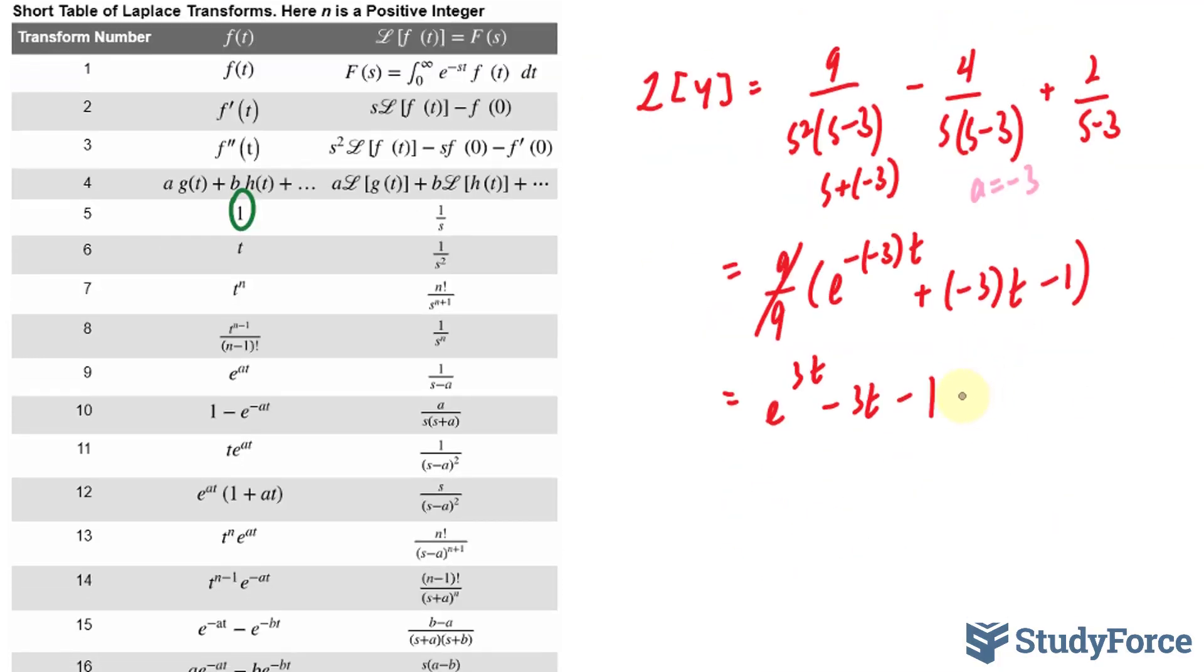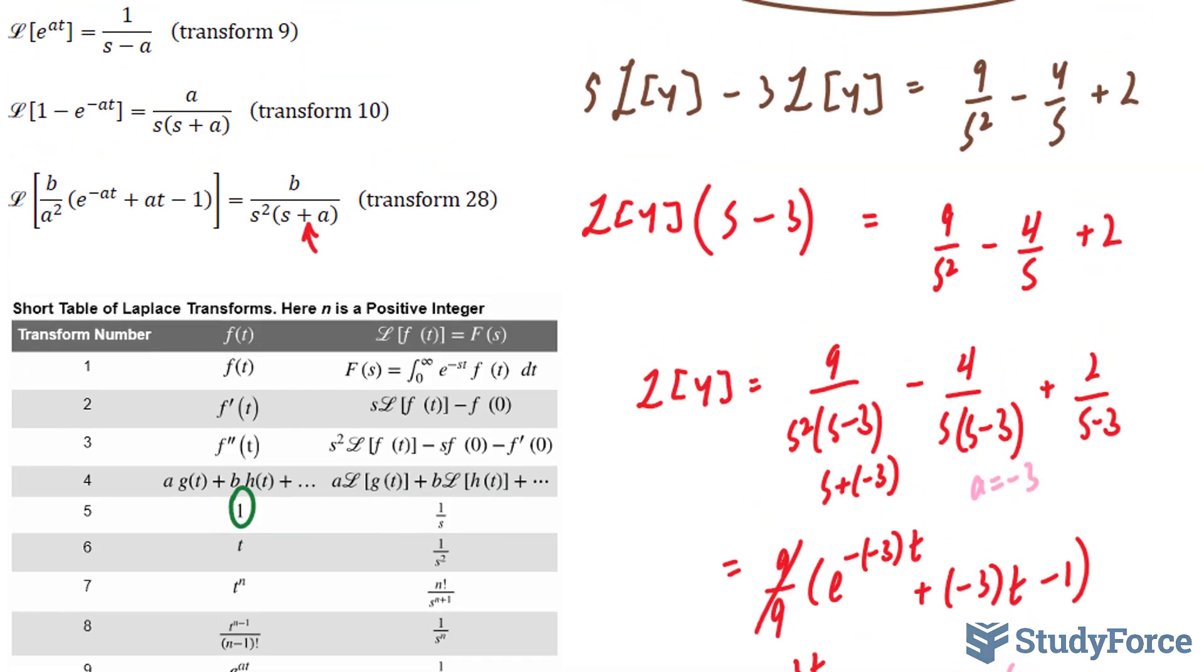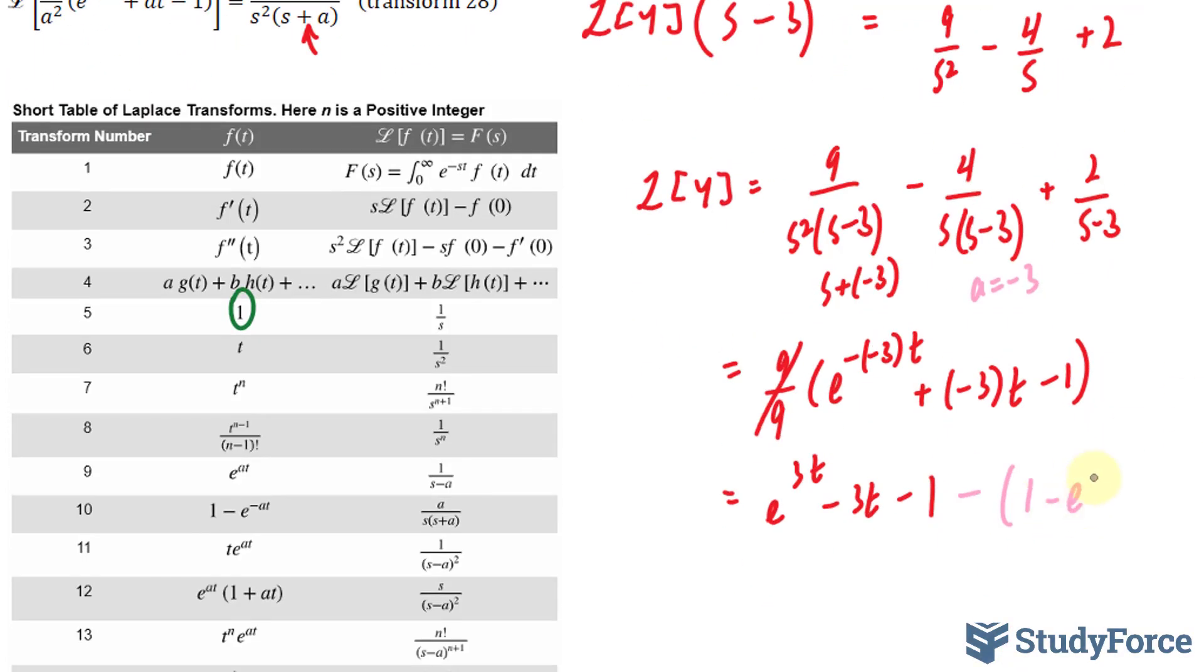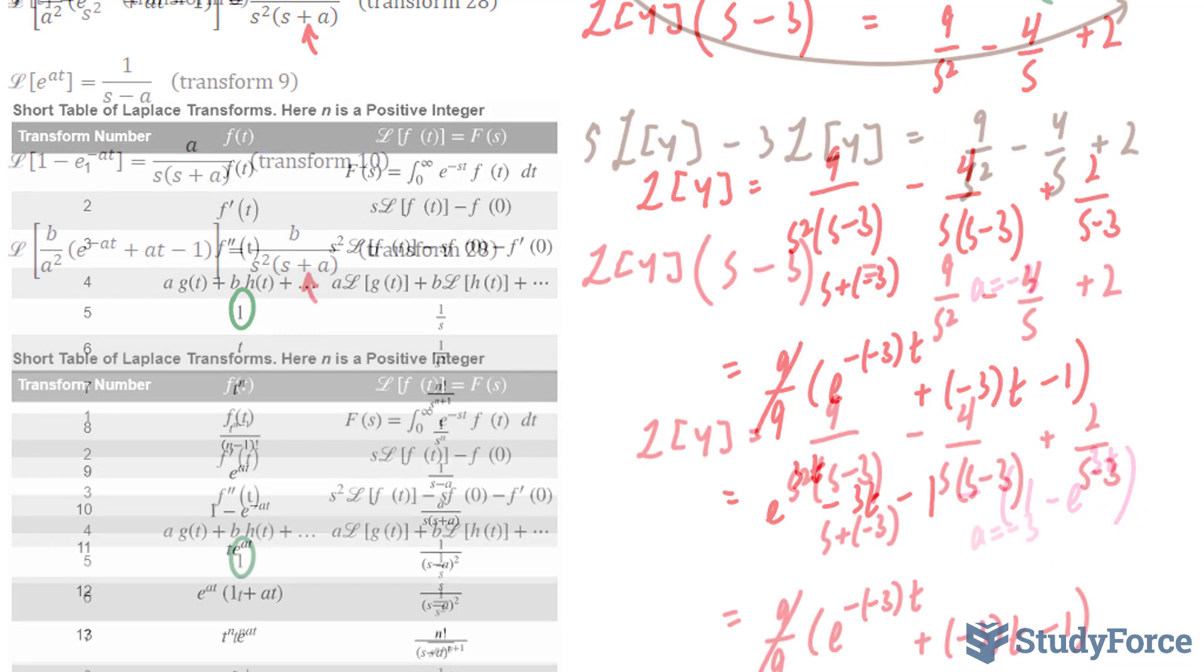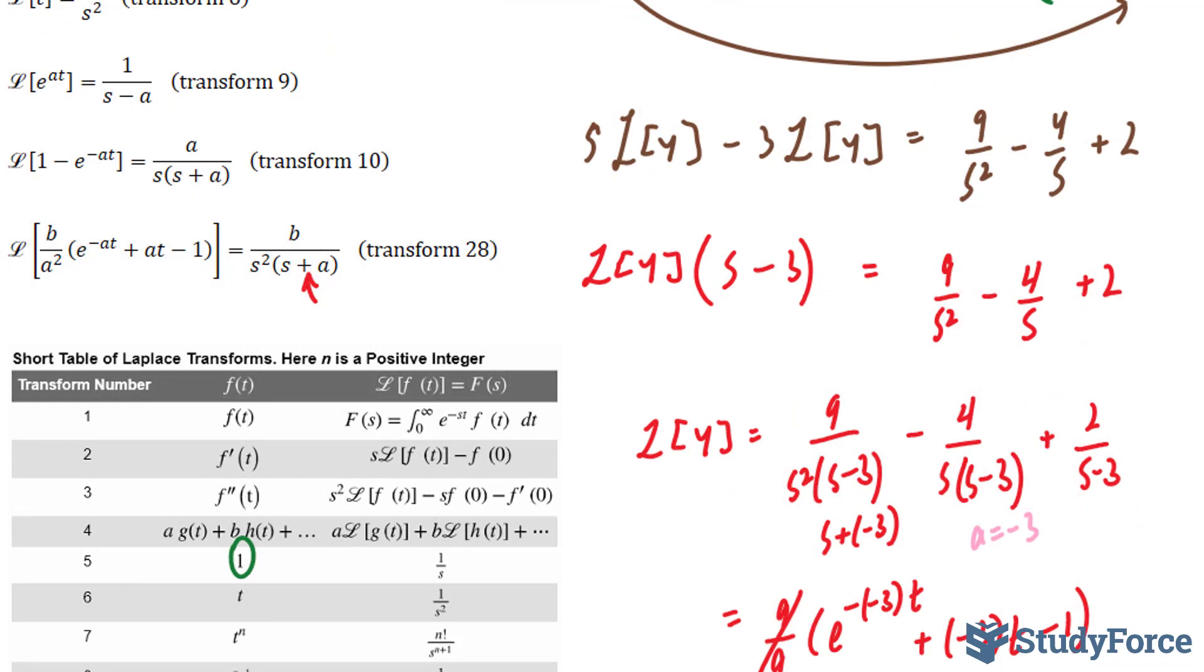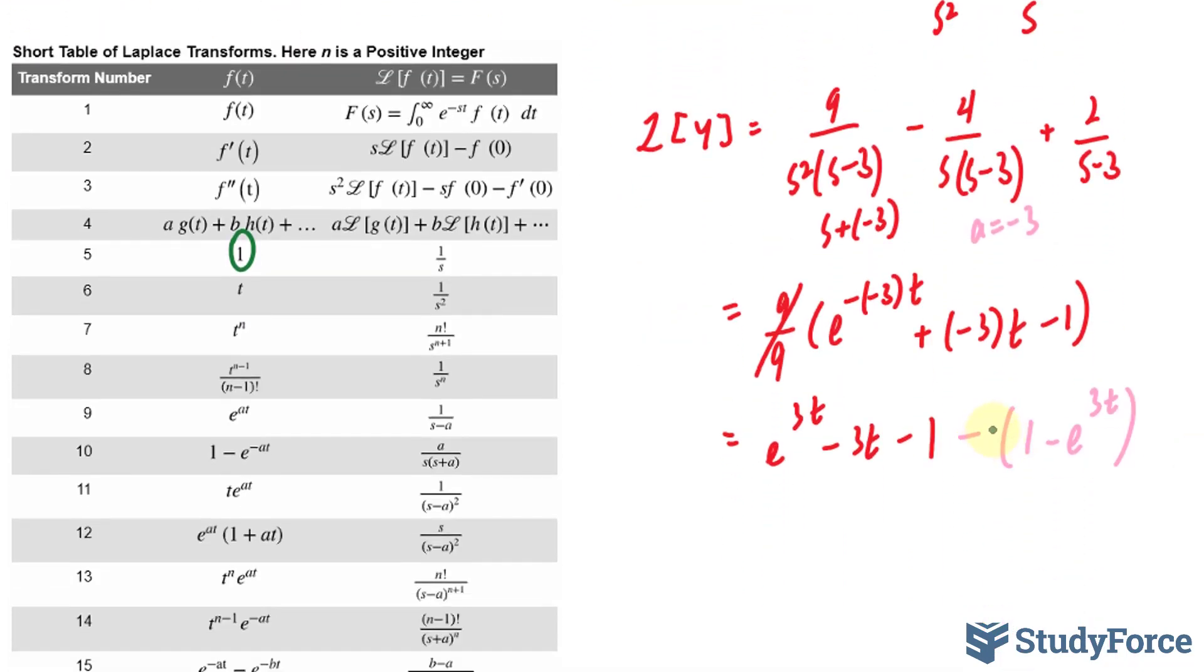I'll switch this term with that, where I have 1 − e^(−at). So minus 1, and again that was minus e^(−at), which we have −(−3), so that's positive 3t. And remember this was supposed to be −3, but it's 4.